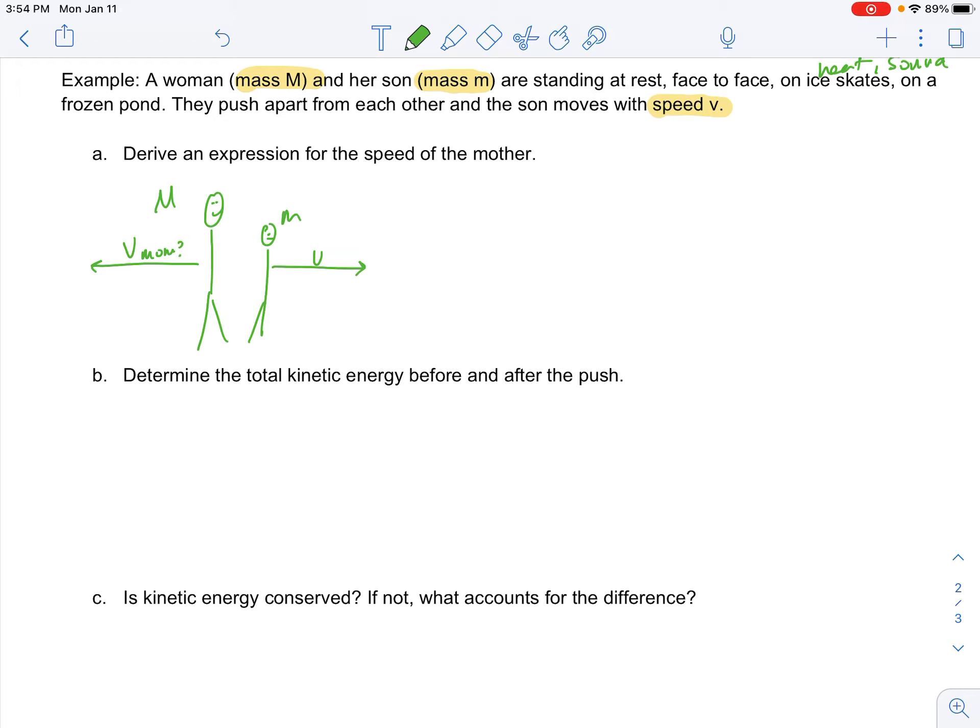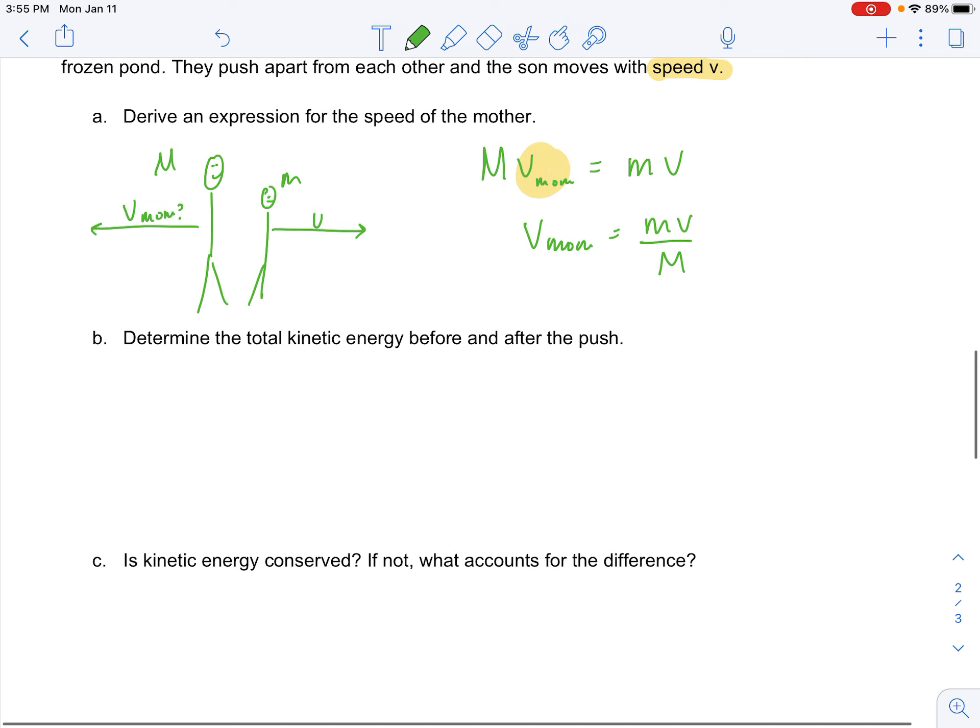So we'll call this V_mom. So the mass of the mother times the velocity of the mother, V_mom, should be equal and opposite to the mass of the sun times the velocity of the sun. And if I wanted to solve for V_mom, I would just divide. So I would get that V_mom equals m, little m, little v over capital M.